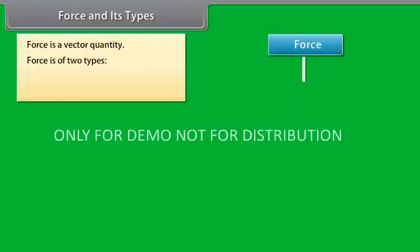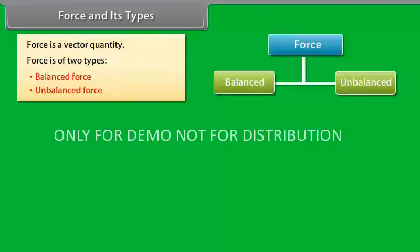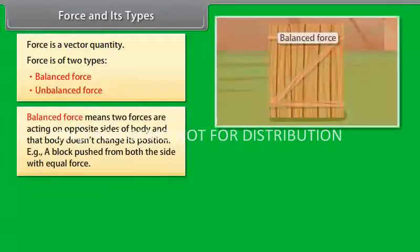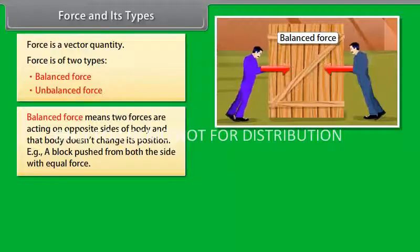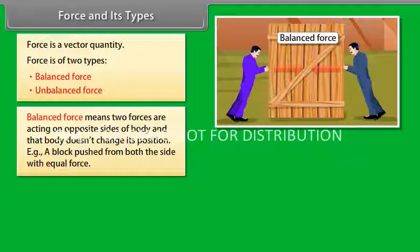Force is of two types: balanced and unbalanced. Balanced force means two forces are acting on opposite sides of the body and that body does not change its position. Example: a block pushed from both sides with equal force.